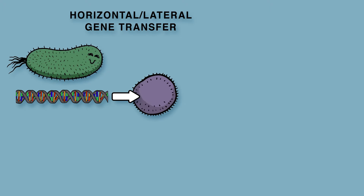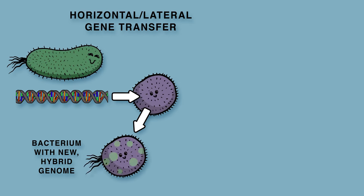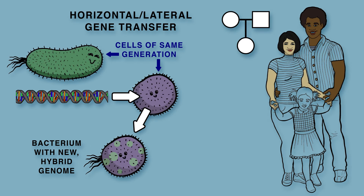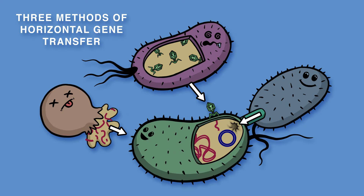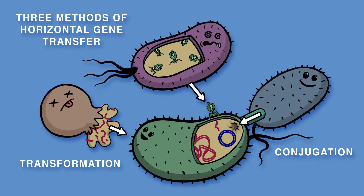Bacteria engage in horizontal gene transfer, meaning that genes are exchanged between cells of the same generation. In contrast, vertical gene transfer occurs when parents pass genes to their progeny. The three methods of horizontal gene transfer that bacteria employ are conjugation, transformation, and transduction, with conjugation being the most common.